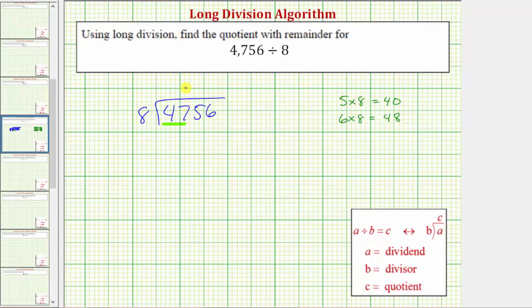We place a 5 above the 7 in the hundreds place value, and now we multiply by the divisor, or multiply by 8. 5 times 8 is equal to 40. We place the 40 below the 47.